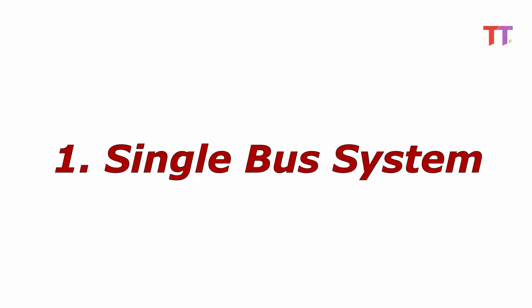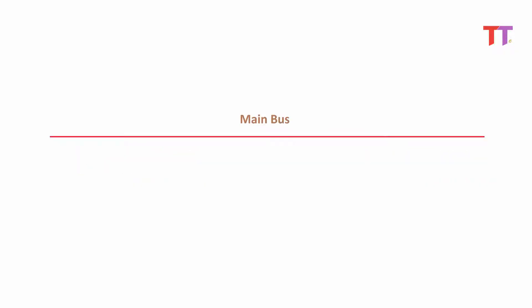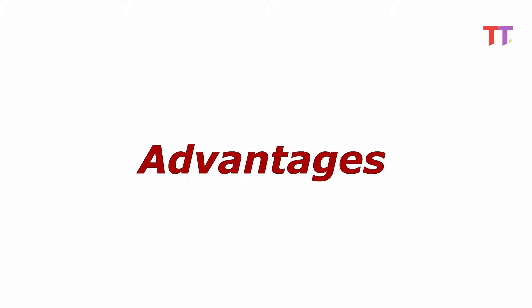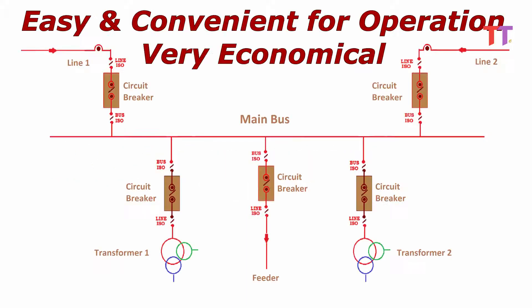1. Single bus system. This is the most basic and simple bus bar system. As we can see in the diagram, in this type all incoming and outgoing bays such as lines, transformers, and feeders are directly connected to a single bus. Advantages of the system: due to its simple design, it is the most easy and convenient for operation. Also, it is very economical because of its least capital cost among all bus bar systems.